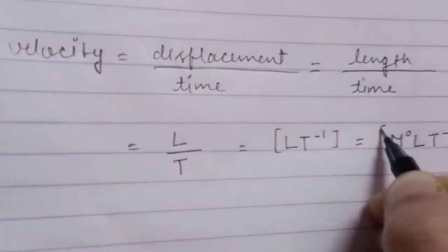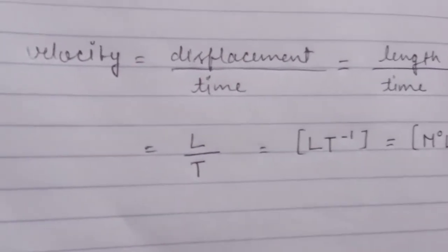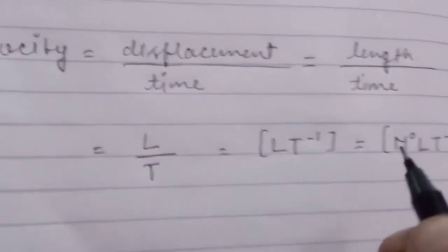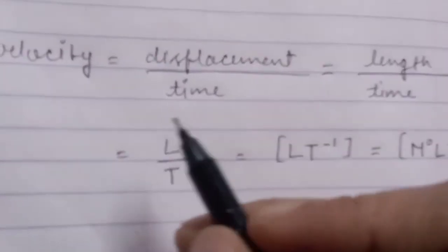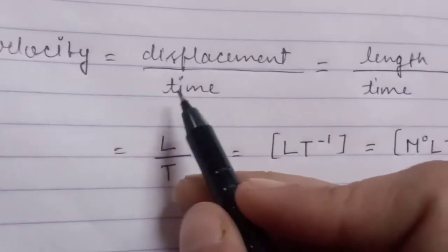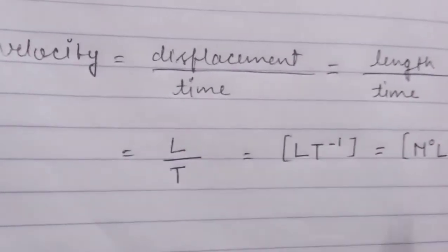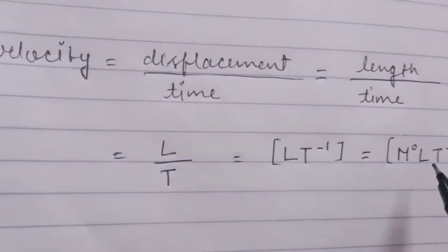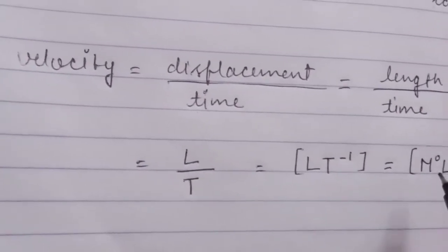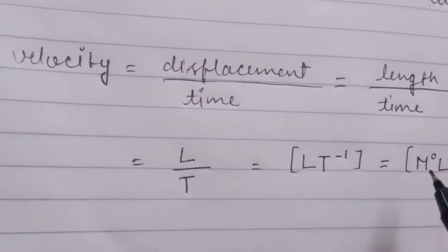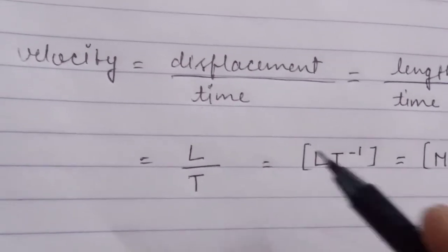So the dimensional formula of velocity is L divided by T, which gives us M⁰ L T⁻¹. This is the dimensional formula for velocity. If you don't know the basic formula, you cannot find the dimensional formula — so you must know the basic formulas for all quantities.